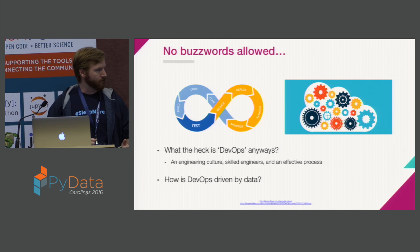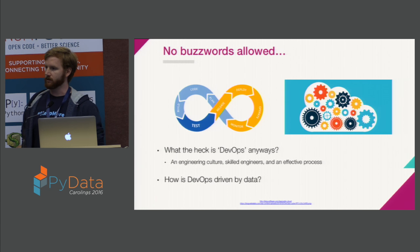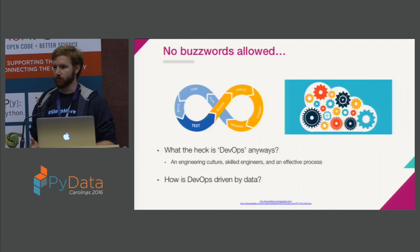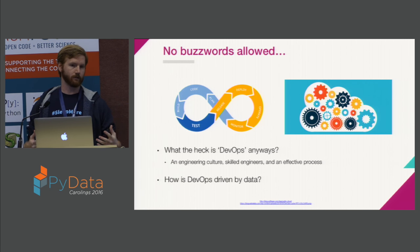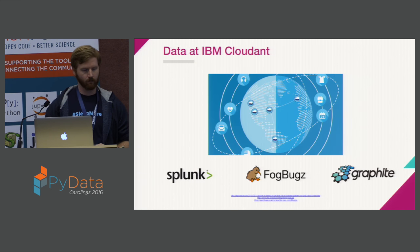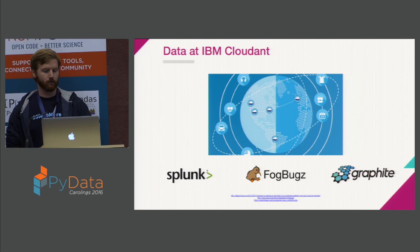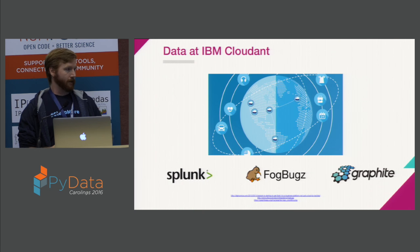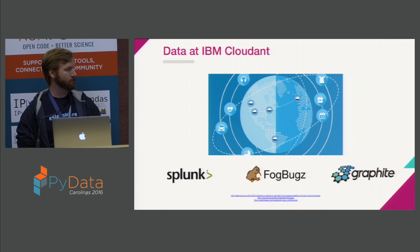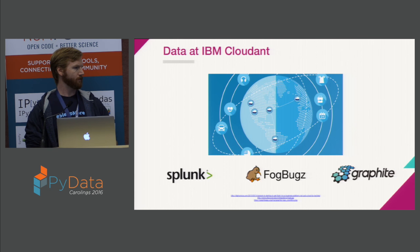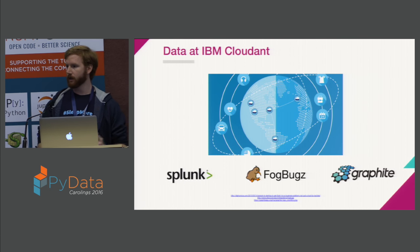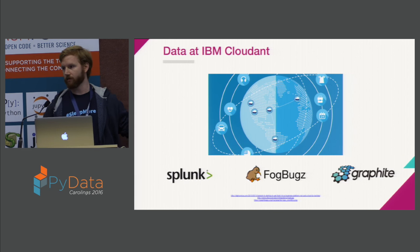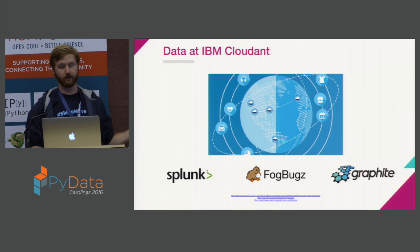So, how is DevOps driven by data? I posit that both operations and development have data at their core, and they have to understand their data to make decisions every day. At Cloud, we have a lot of data. We use Splunk — a log aggregation engine with some pretty advanced features and alerting — and we push nearly a terabyte of logs to Splunk a day. That's a lot of data to make decisions from.